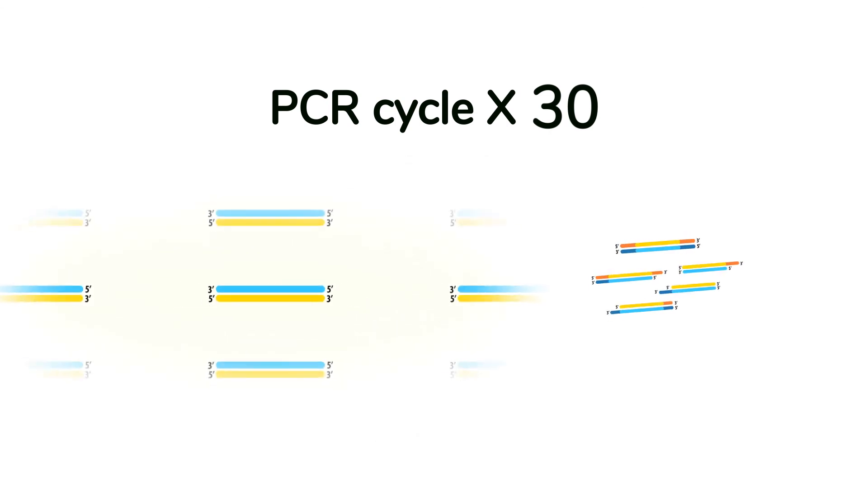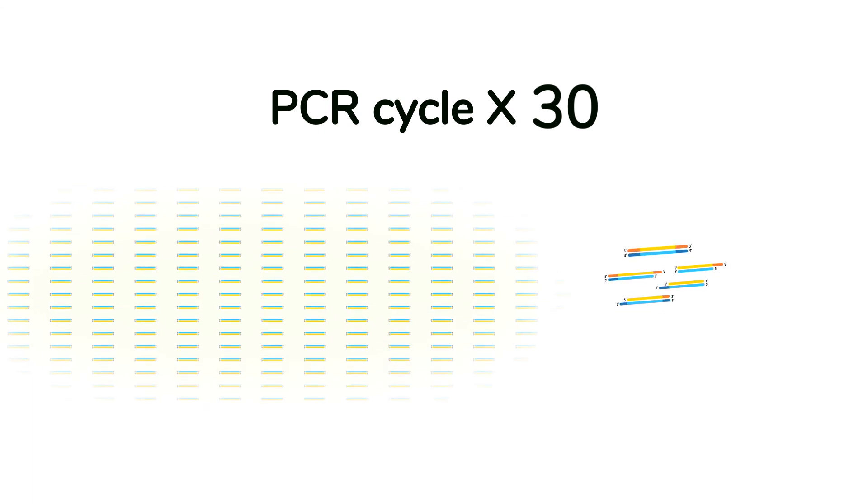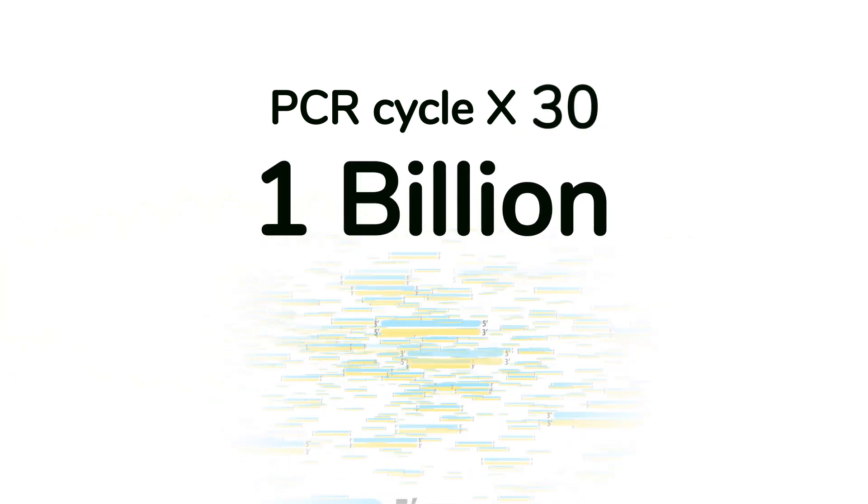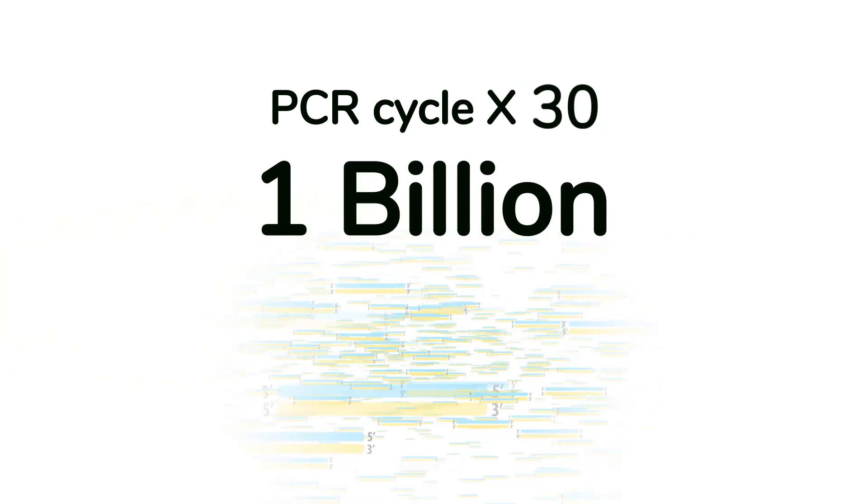As a result, the DNA region of interest will be much more abundant than the unwanted overhang products and the initial template of the first PCR cycles. Thirty cycles of PCR produce over one billion copies of the amplified region, compared to only a few overhang products.